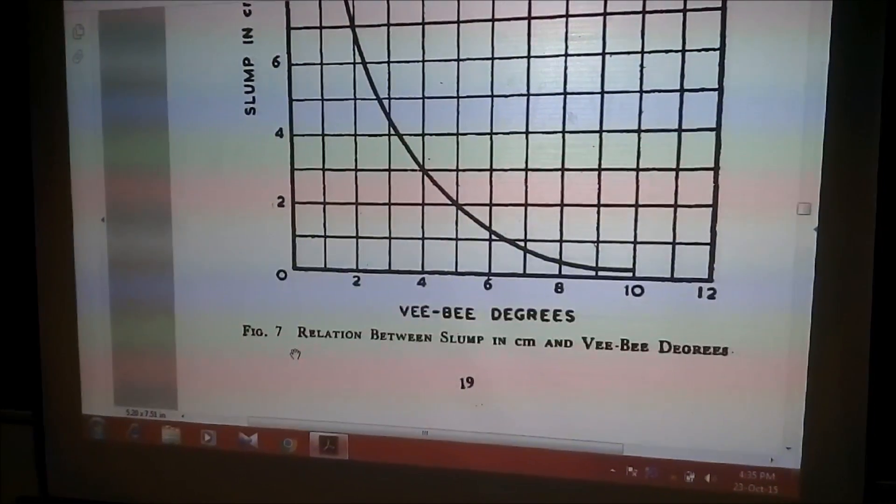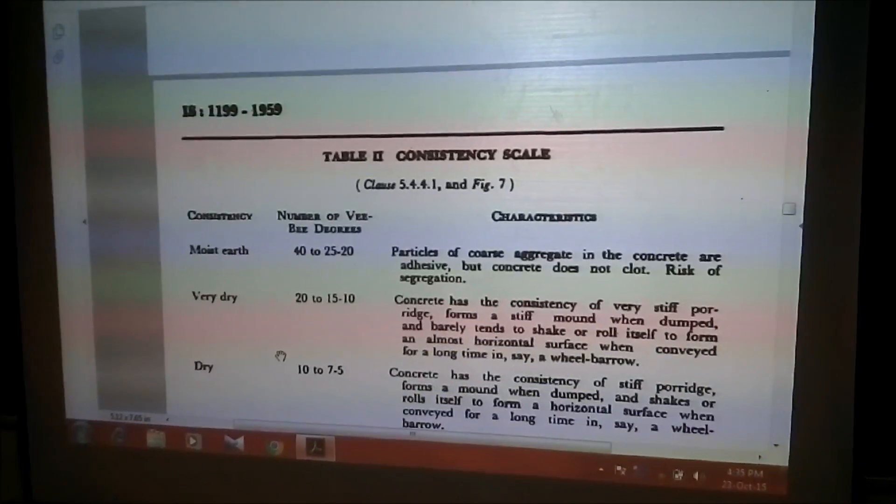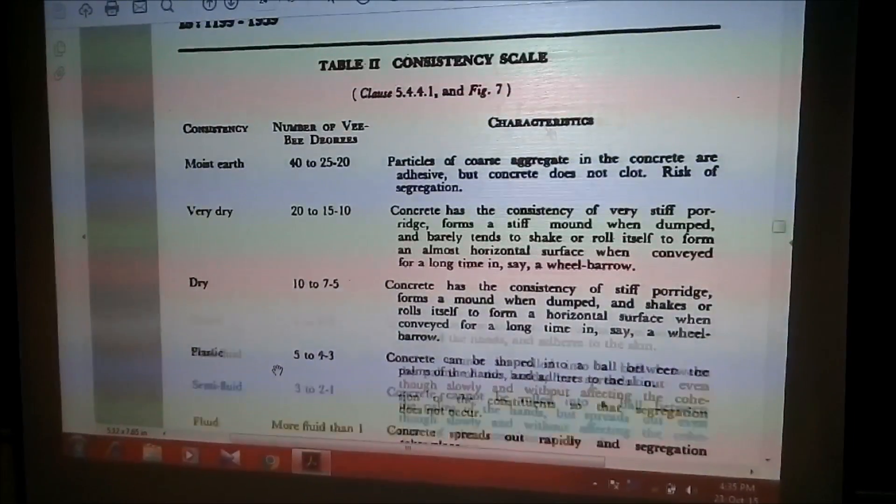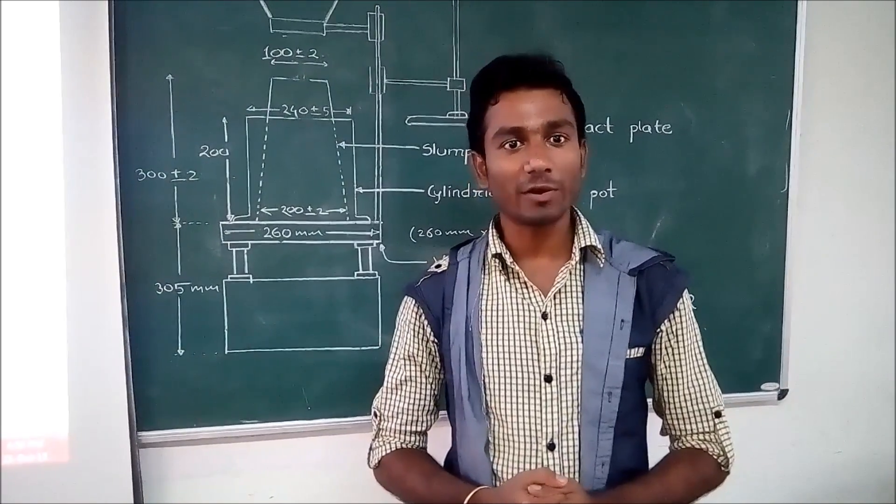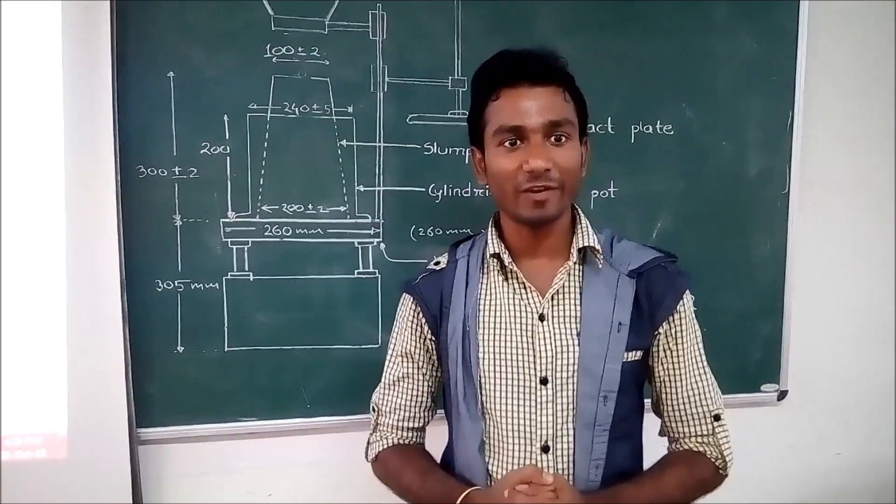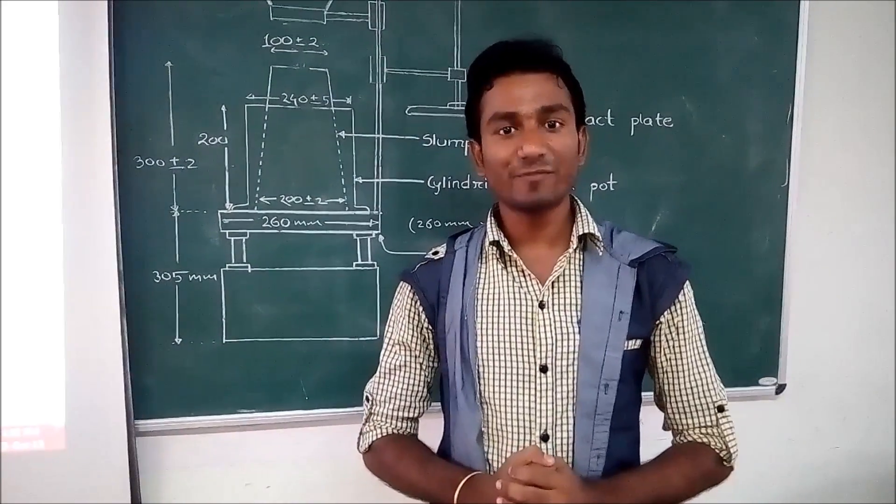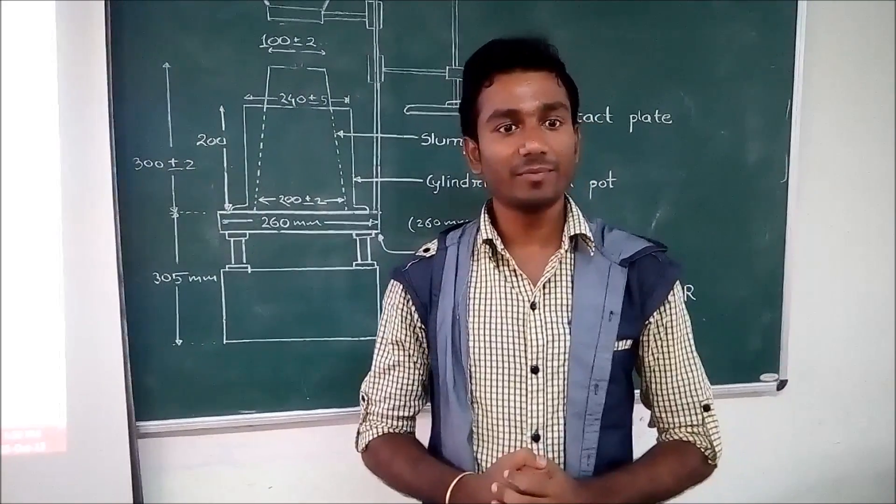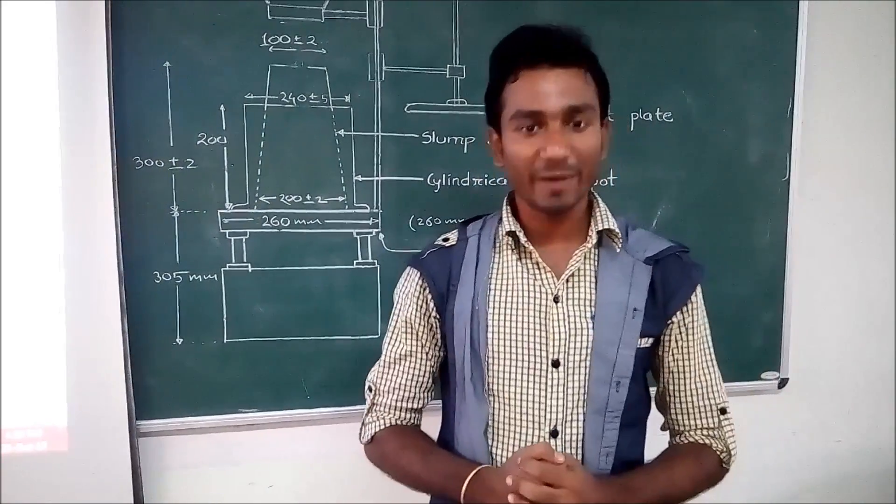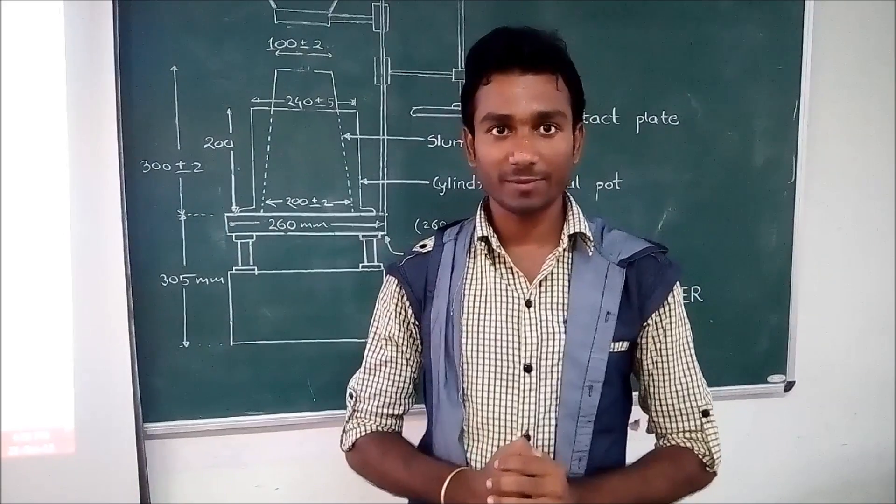So, it's okay. Also, this IS code defines characteristics of concrete as per the obtained VB degree. This test is not appropriate for highly workable concrete mixes having slump greater than 75 mm or so. Because for such mix, the remolding is so quick that the time cannot be measured. This test is used for precast, prestressed and road work. Thank you.